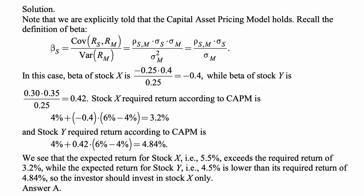Beta of Stock X is negative 0.25 times 0.40 over 0.25, which equals negative 0.4. Beta of Stock Y is 0.30 times 0.35 over 0.25, which equals 0.42. Based on CAPM, the required return for Stock X is 4% plus (negative 0.4) times (6% minus 4%), which gives 3.2%.